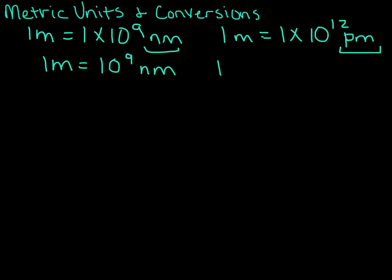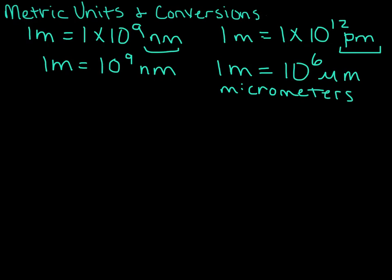Another important unit: 1 meter is equal to 10 to the 6th micrometers. And then finally, 10 to the 2nd power centimeters is equal to 1 meter — you'll also see this as 100 centimeters. Now that we've talked about some of these length conversions for metric units, let's go ahead and do a few examples.